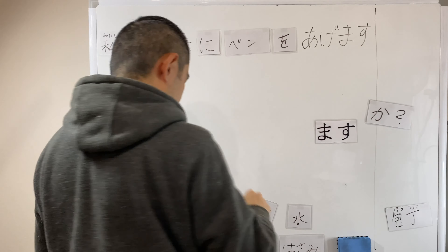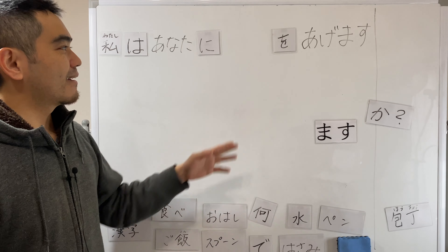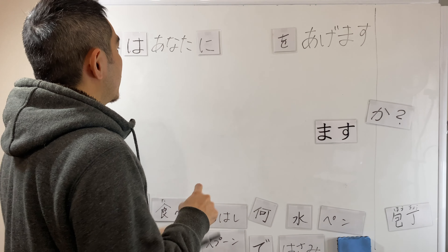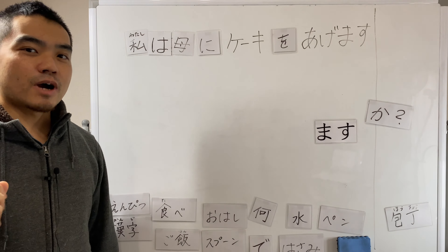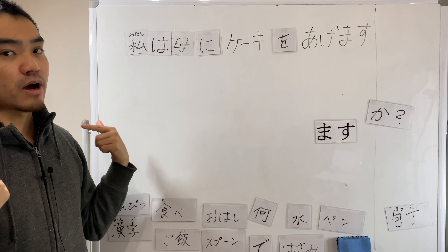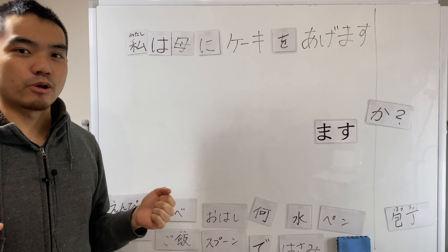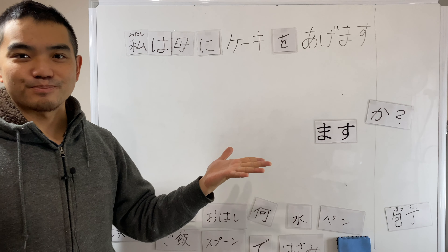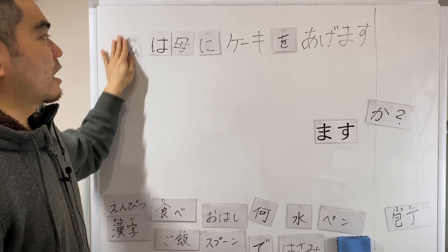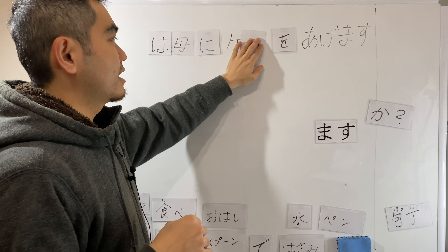It's a Christmas day. What do you give to someone on a Christmas day? 私は母にケーキをあげます。母 — mother, my mother. 私は母にケーキをあげます。Because it's a Christmas day or her birthday, right? あなたは母に何をあげますか?